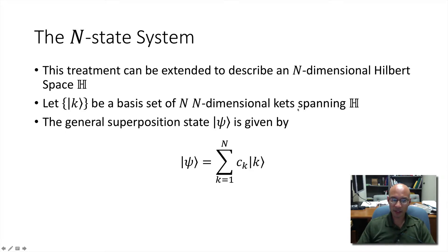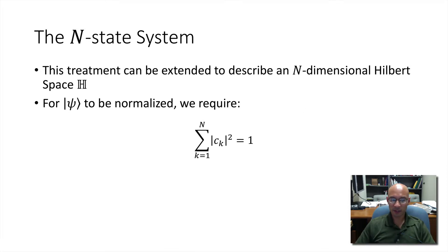So if we have a basis of vectors K that's n dimensional, and we need n of them, then we can span the Hilbert space H. So the general superposition state takes this form with n states. And here's the normalization condition in n states.